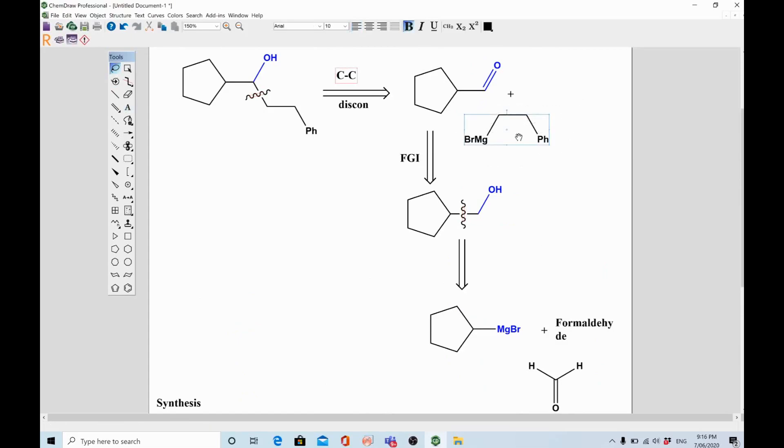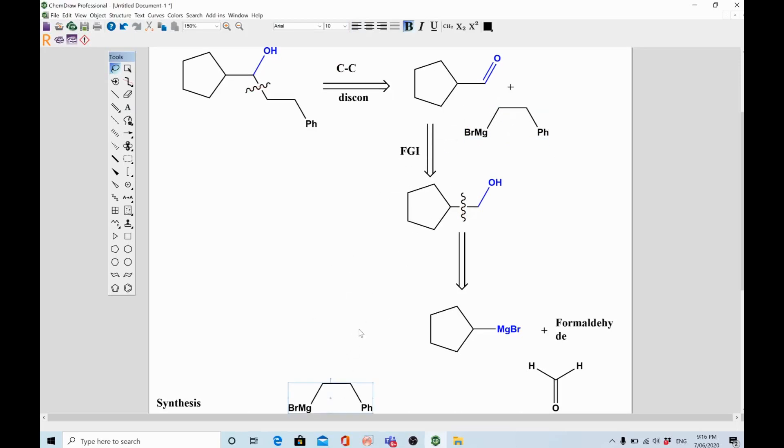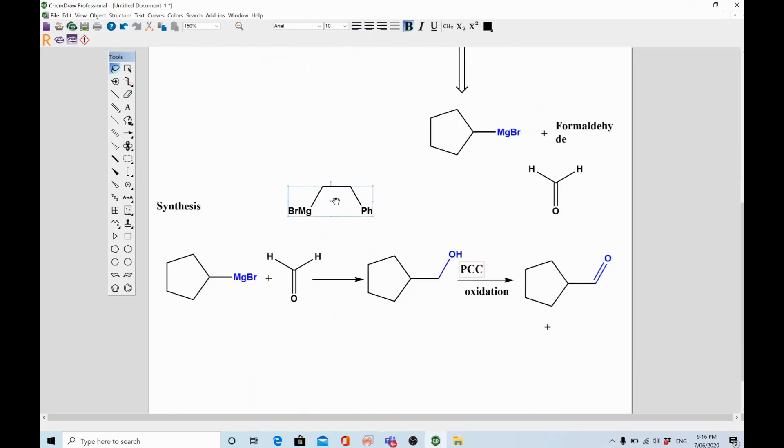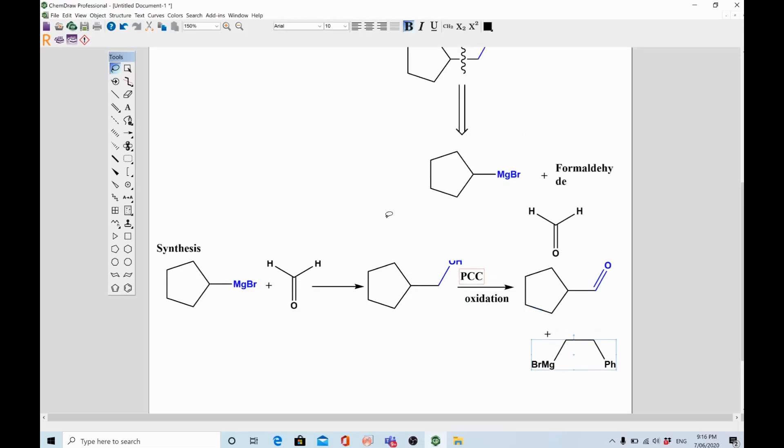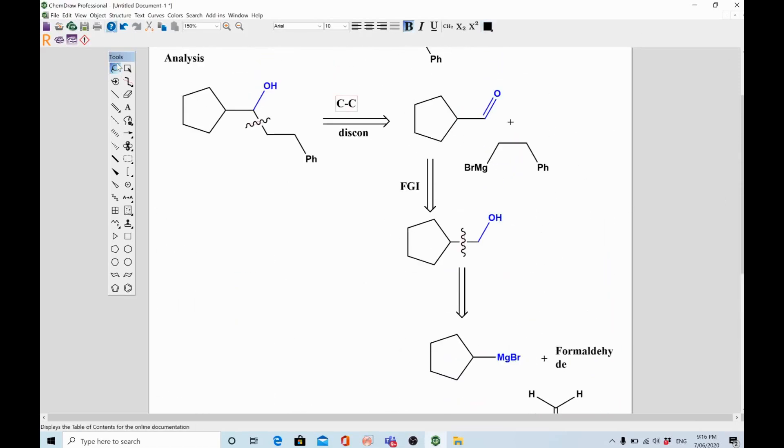All right, now next step will be to react this aldehyde with Grignard reagent. This one, again, I'm not drawing the structure. I'm just pulling from the top. So these are the skills that you need to learn for ChemDraw Professional. If you haven't watched the video about ChemDraw, you can watch my video how to use ChemDraw software. If you have any question regarding this, I'm happy to answer the questions. Okay, if you combine these two reagents, aldehyde and Grignard reagent, you will reach your destination, that is your target molecule.